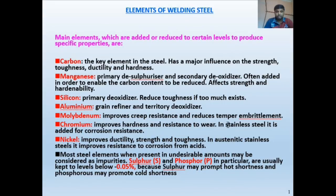First, you need to know the basic concept: elements of welding steel. The main elements are those added or reduced to a certain level to produce specific properties. These elements are required so that after welding, the same properties are achieved as in the base metal. Carbon is the key element in steel — it has a major influence on strength, toughness, ductility, and hardness.